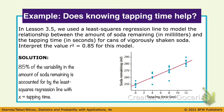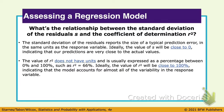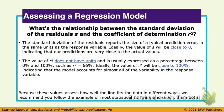What's the relationship between S and r squared? The standard deviation of the residuals S tells us the typical difference between our prediction and our actual value — we want S close to zero. R squared does not have units, just like correlation r, and it tells us what percent of our data is a good fit — we want r squared close to 100%. We want S to be small, and we want r squared to be big.